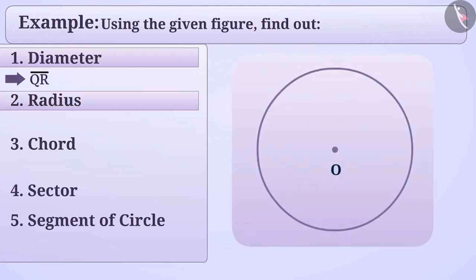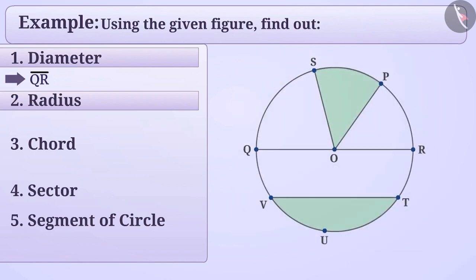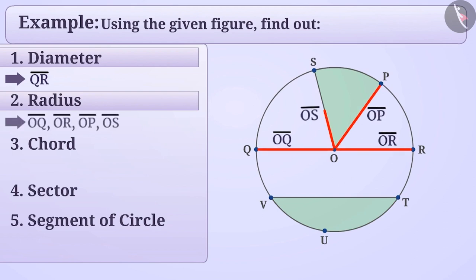Radius means a line segment that connects a point on a circle to its centre. The given circle has a total of 4 radii. Can you tell what they are? Give it a try. Exactly, here the radii are OQ, OR, OP and OS.